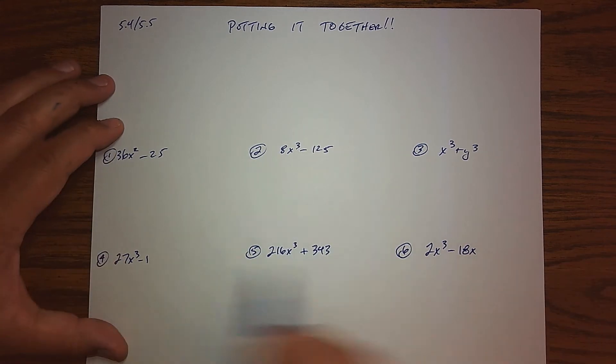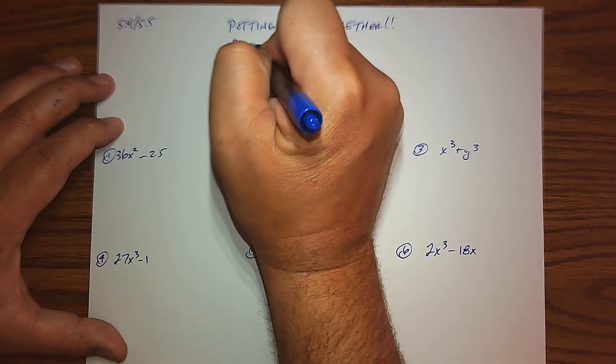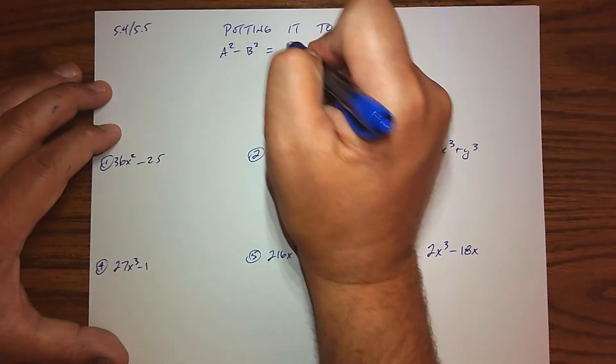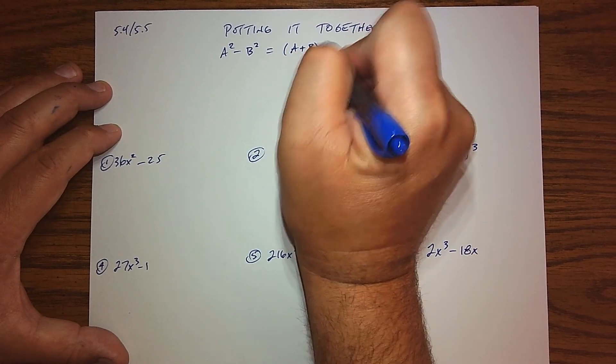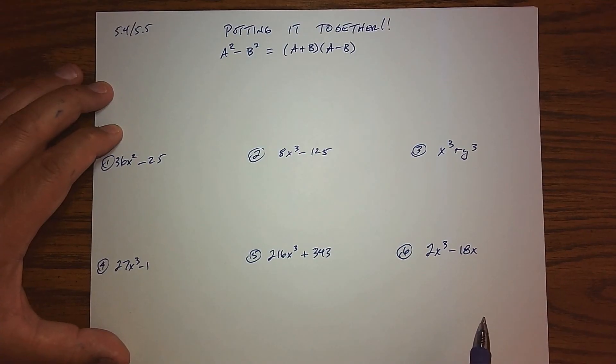Before we tackle this, let's review our patterns. So the first and probably most famous one is known as the difference of squares, and we know that is basically take those bases and we add them and take those bases and we subtract them. So there's your factorization or your multiplication of the difference of squares.